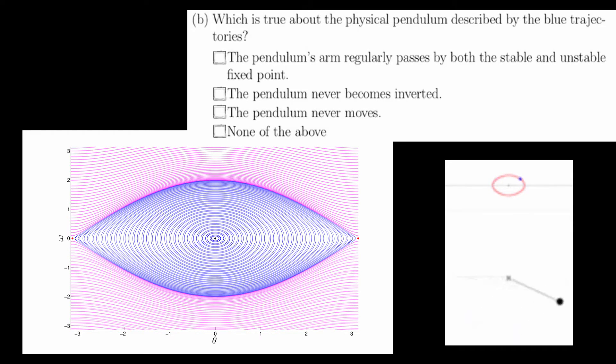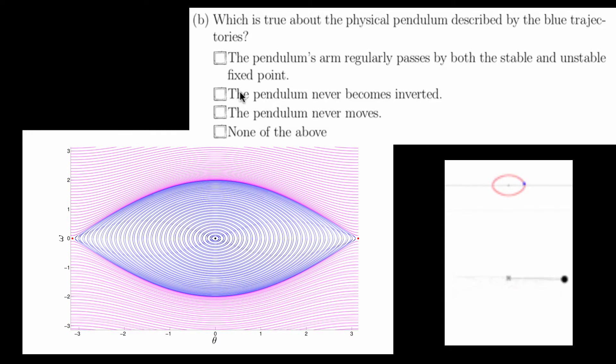Now notice on the theta axis that each of the blue trajectories is bound between, but not touching, minus pi to pi. This means that the blue trajectories never pass through the unstable fixed point. Another way of saying this is the pendulum never becomes inverted. This makes the first answer wrong and the second answer correct. So the answer to this question is the pendulum never becomes inverted.